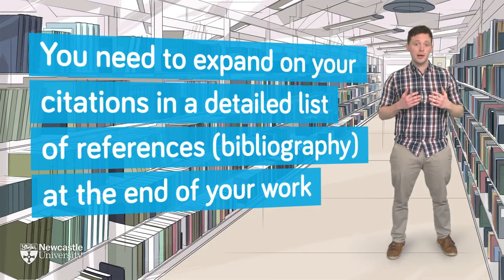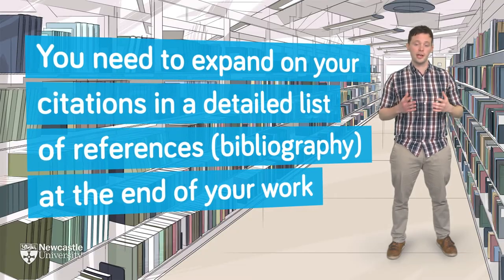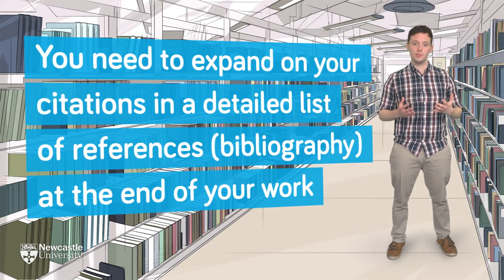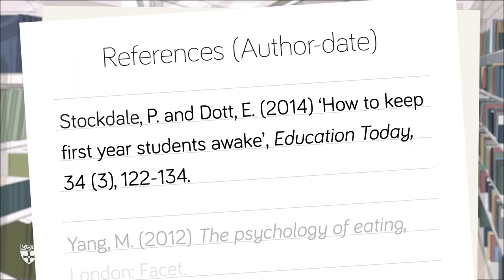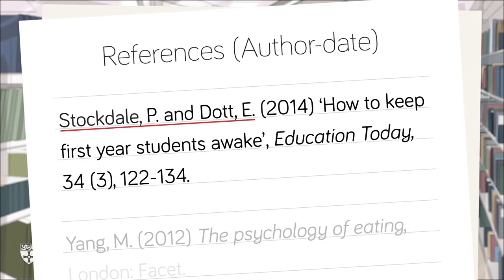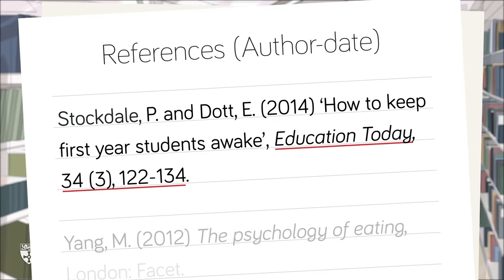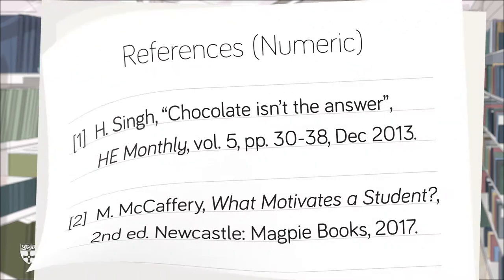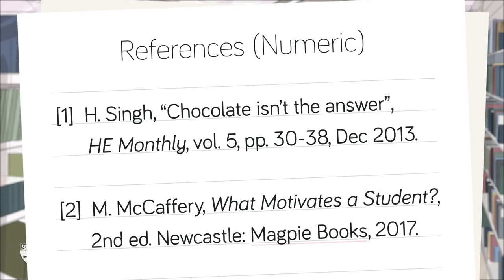Next, you need to expand on your citations in a detailed list of references, or bibliography as it's sometimes known, at the end of your work. Each citation should have a full reference that includes the name of the information source, the name of its author or creator — and there's often more than one — the date it was published, and where exactly it can be found. Depending on the source, you might also need to include other information such as the volume number, publisher name and place of publication.